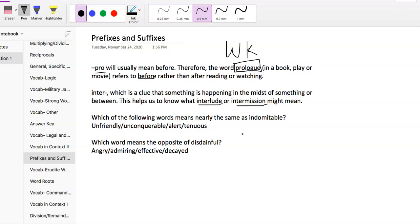Let's look at a couple questions. Which of the following words means the same as indomitable? Let's say we don't know what that word means—is there anything we can do with our answer choices? We have unfriendly, unconquerable, alert, tenuous. With prefixes and suffixes, this is one of the harder sections in that I don't immediately see something I could eliminate. It may just come down to learning what this word means and being prepared for it.